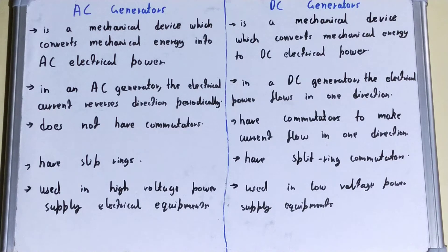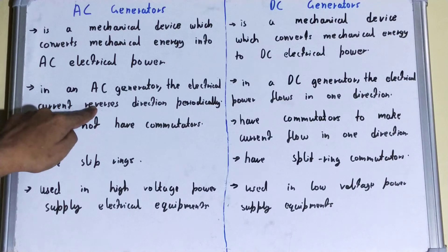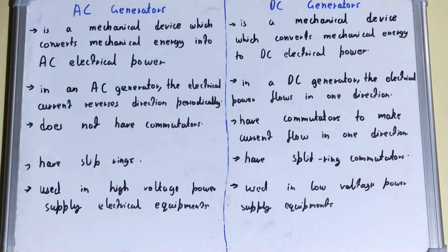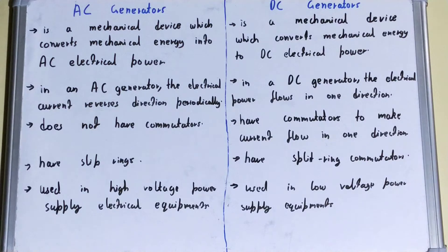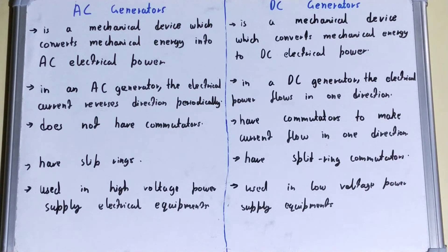In an AC generator, the electrical current reverses direction periodically. Because the AC generator generates alternating current, the direction of the current changes or reverses periodically.